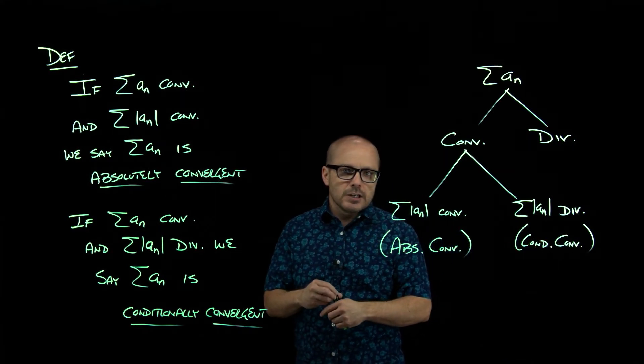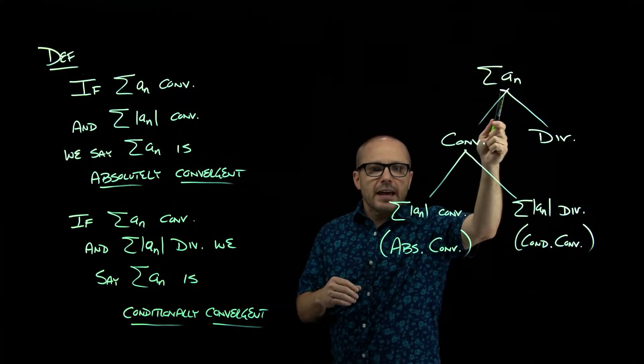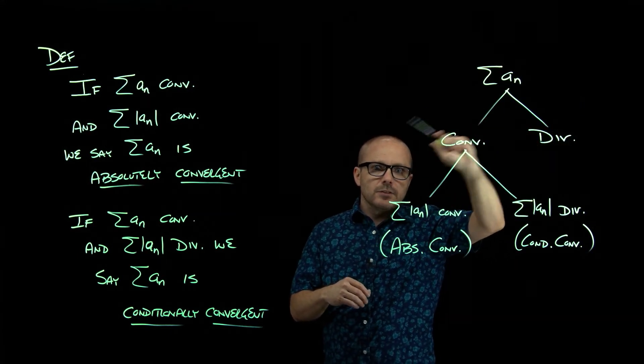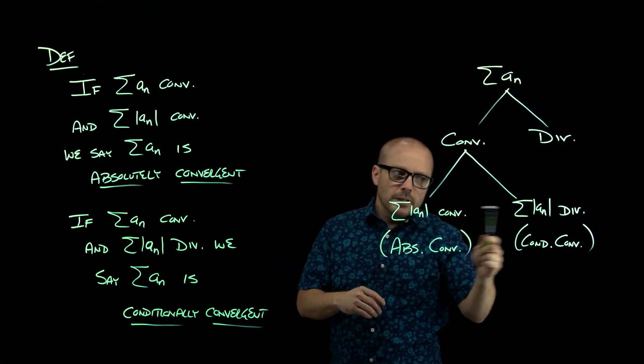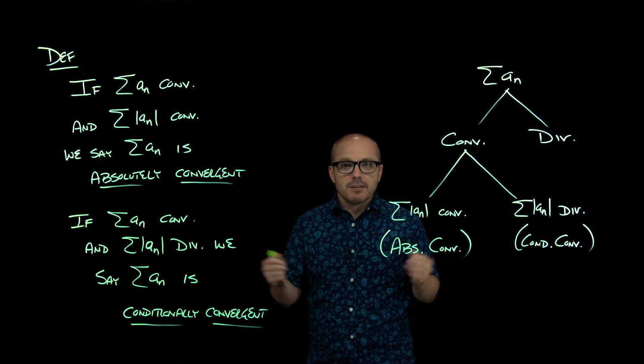Things that are conditionally convergent, you really do have to add them up in the order they're listed. If you start messing with the order, you can argue different sums.